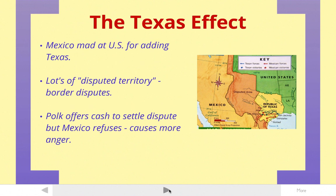So in a way, Mexico believes that the United States added part of its country to the United States, which would be bad if you were Mexico. President Polk offers Mexico some cash to settle this dispute. Mexico, of course, refuses. It's kind of insulted that the United States is trying to buy them off. And this causes more anger.